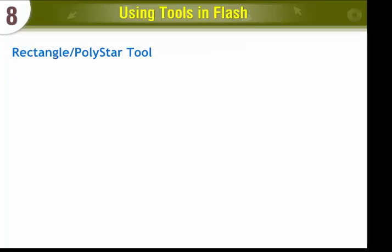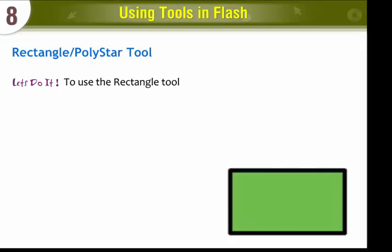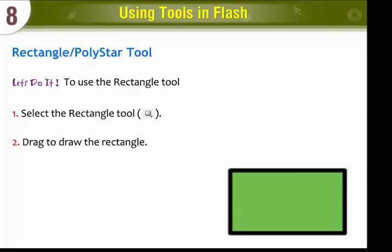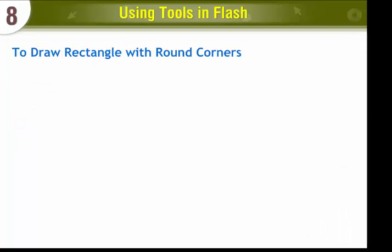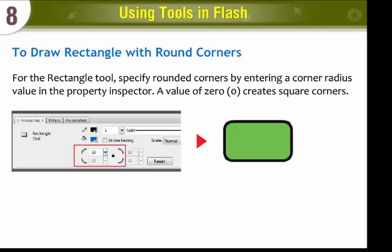Rectangle Tool. To use the Rectangle Tool, select the Rectangle Tool and drag to draw the rectangle. To draw a rectangle with round corners, specify rounded corners by entering a corner radius value in the Property Inspector. A value of 0 creates square corners.